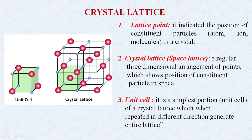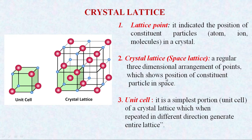So when I arrange these atoms along three directions — that is along the x-axis, along the y-axis, and along the z-axis — then I am going to get one complete structure. That complete structure, which I get after extending lattice points in three directions, that is three dimensions, is called crystal lattice or space lattice.